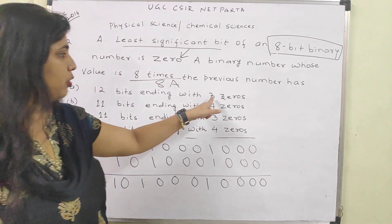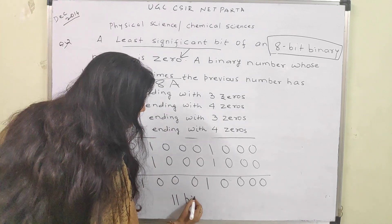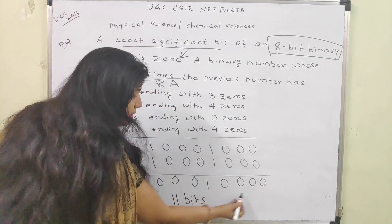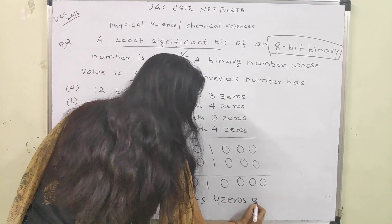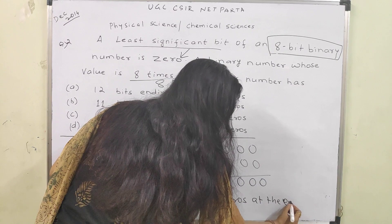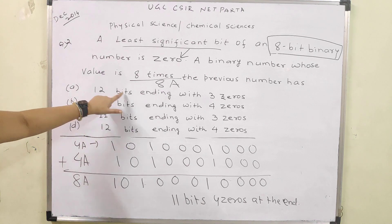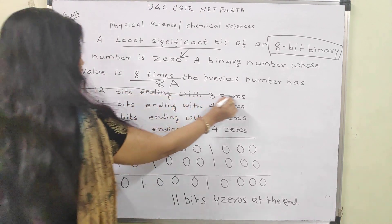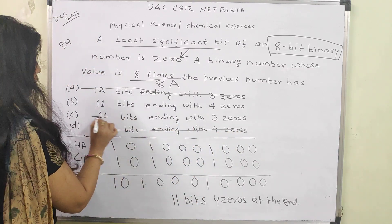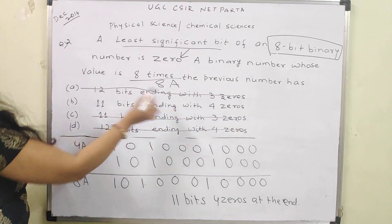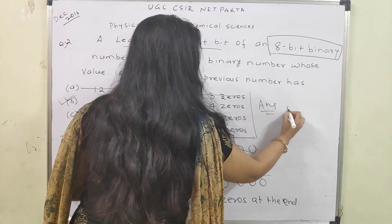So we have got 11 bits. And ending with how many zeros? Counting from the right: 1, 2, 3, 4 — four zeros at the end. So the result 8A has 11 bits ending with 4 zeros. Looking at the options: 12 bits is wrong, 12 bits ending with 3 zeros is incorrect. So 11 bits ending with 4 zeros — option B is correct.